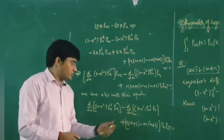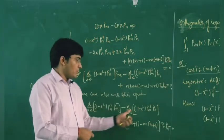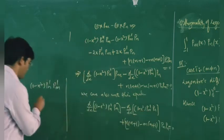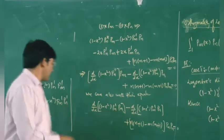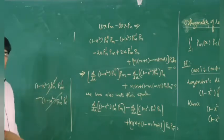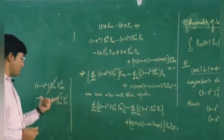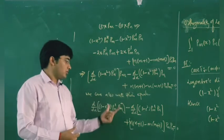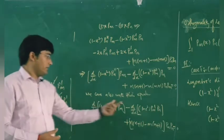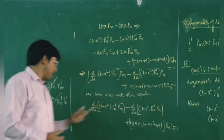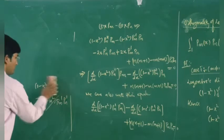Similarly, differentiating the second term gives d/dx of [(1 - x²)·P_m'·P_n] plus (1 - x²)·P_m'·P_n'. The added and subtracted terms cancel each other, so simplifying we get the derivative form. Now let us integrate this equation with respect to x from minus 1 to plus 1.